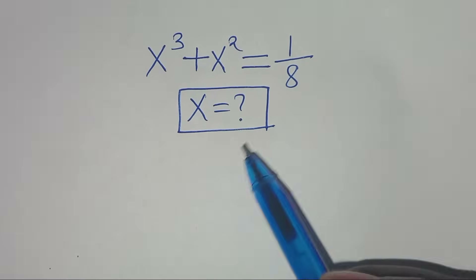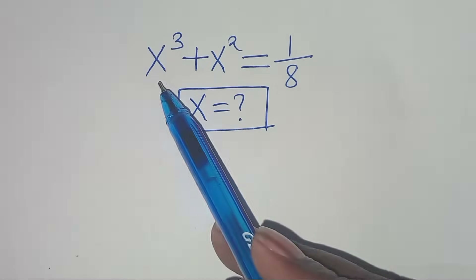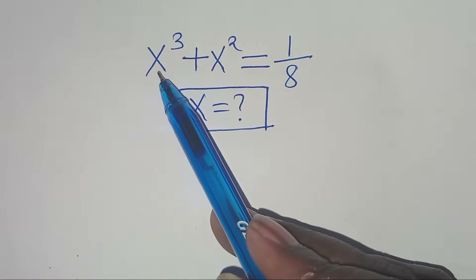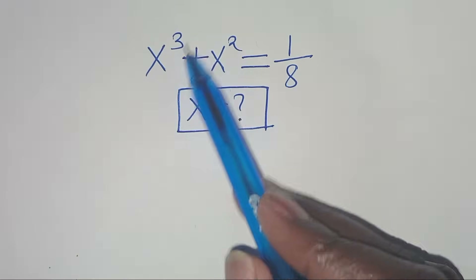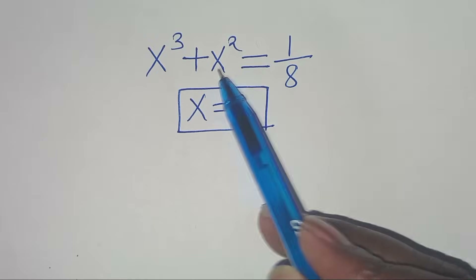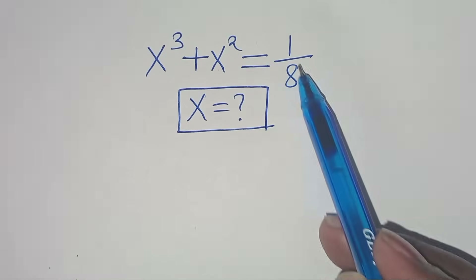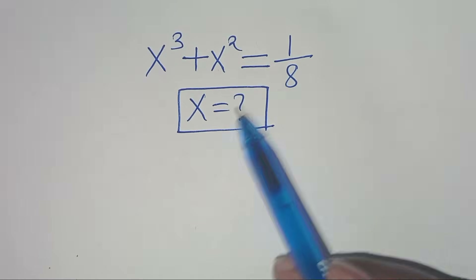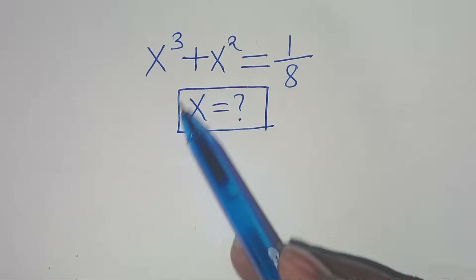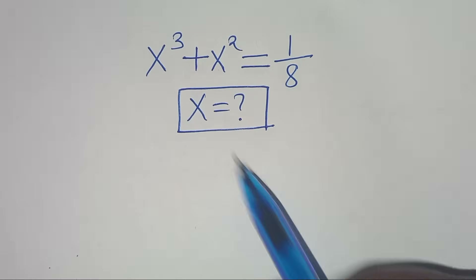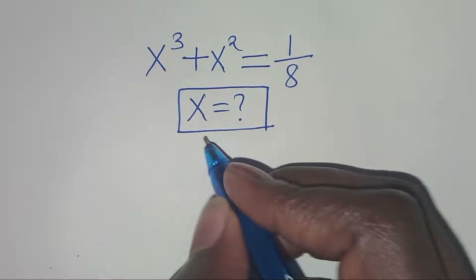Hello everyone, you are welcome to solve this nice algebra problem, which is x to the power of 3 plus x to the power of 2, this is equal to 1 over 8. So, what is the value of x, or what are the values of x?